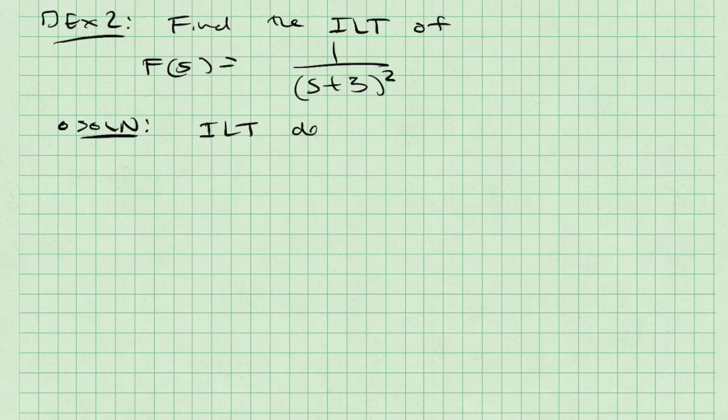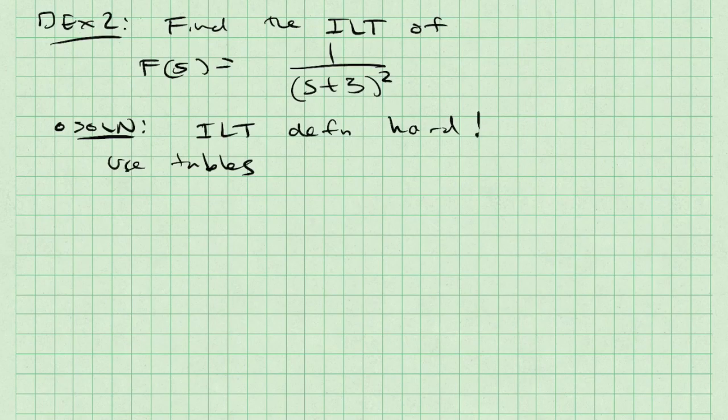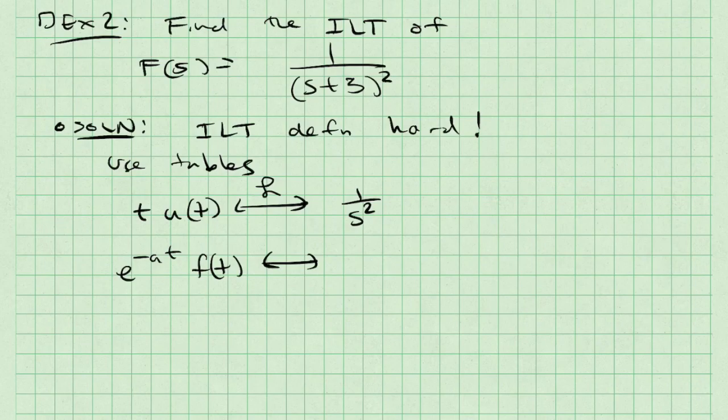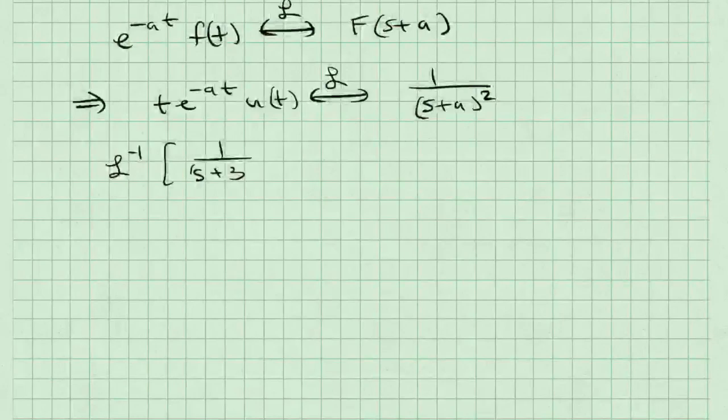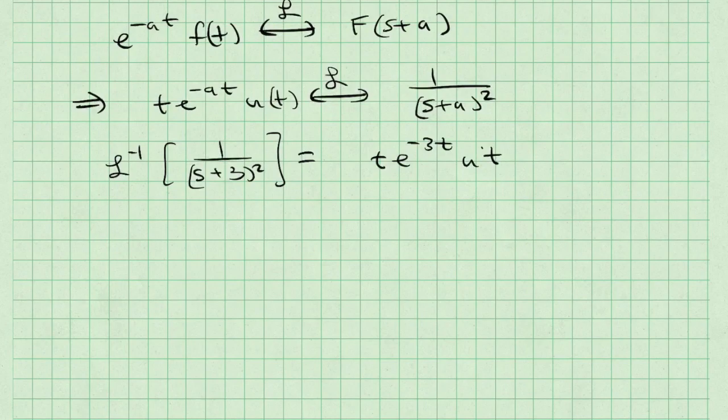In this next example, I'd like to find the inverse Laplace transform of F(s) which is equal to 1/(s+3)^2. To solve this, I might want to first look at the inverse Laplace transform definition and realize that it's really hard to do mathematically. So instead I might want to use the tables. The first pair that I'm going to use is t u(t) transforms to 1/s^2 because my function F(s) looks like 1 over something squared. I'm also going to use the frequency shifting property which says e^(-at) f(t) Laplace transforms to the Laplace transform of f but where the argument instead of being of s is instead of s plus a. The result is that I get the pair t e^(-at) u(t) Laplace transforms to 1/(s+a)^2. As a result, my inverse Laplace transform is equal to t e^(-3t) u(t).